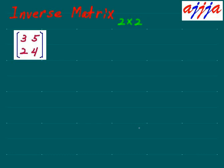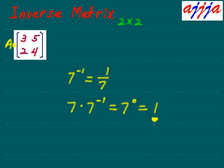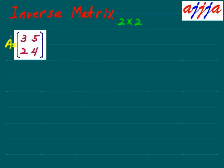We have a two-by-two square matrix. Let's name it matrix A. What is the inverse? Simply, you know that the inverse of seven is seven to the negative first power, which is one over seven. If you multiply seven times its inverse, you get seven to the zero power, which is one. We call this the multiplicative inverse, and we call that result of one the identity.